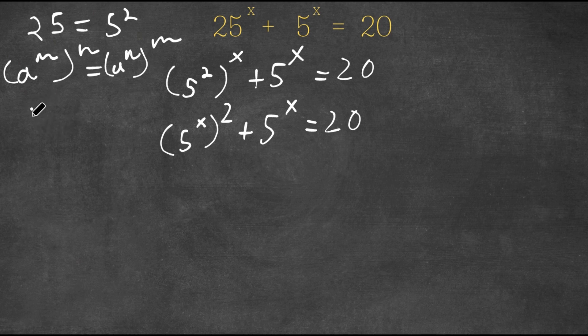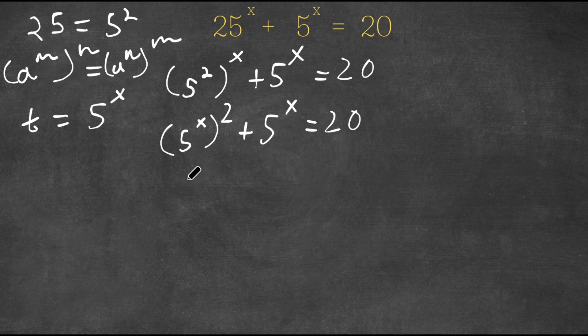So now I'm going to let the variable t equal to 5 to the power of x. So now if I replace t with 5 to the power of x, I get t squared plus t is equal to 20.